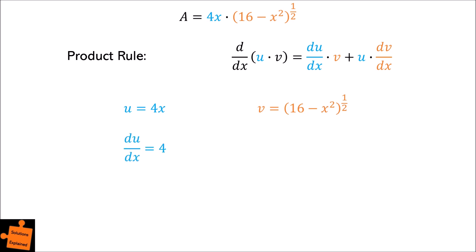Therefore, du by dx will be equal to 4, and dv by dx will be equal to 1 half, multiplied by 16 minus x squared to the power of minus 1 half, multiplied by minus 2x.